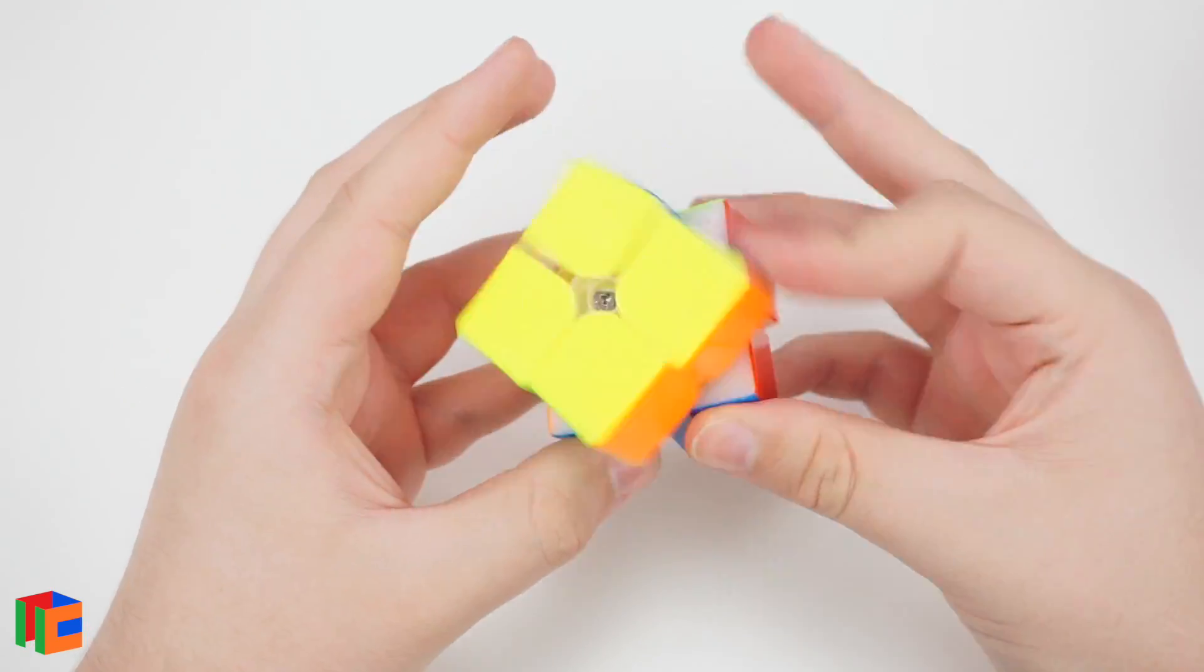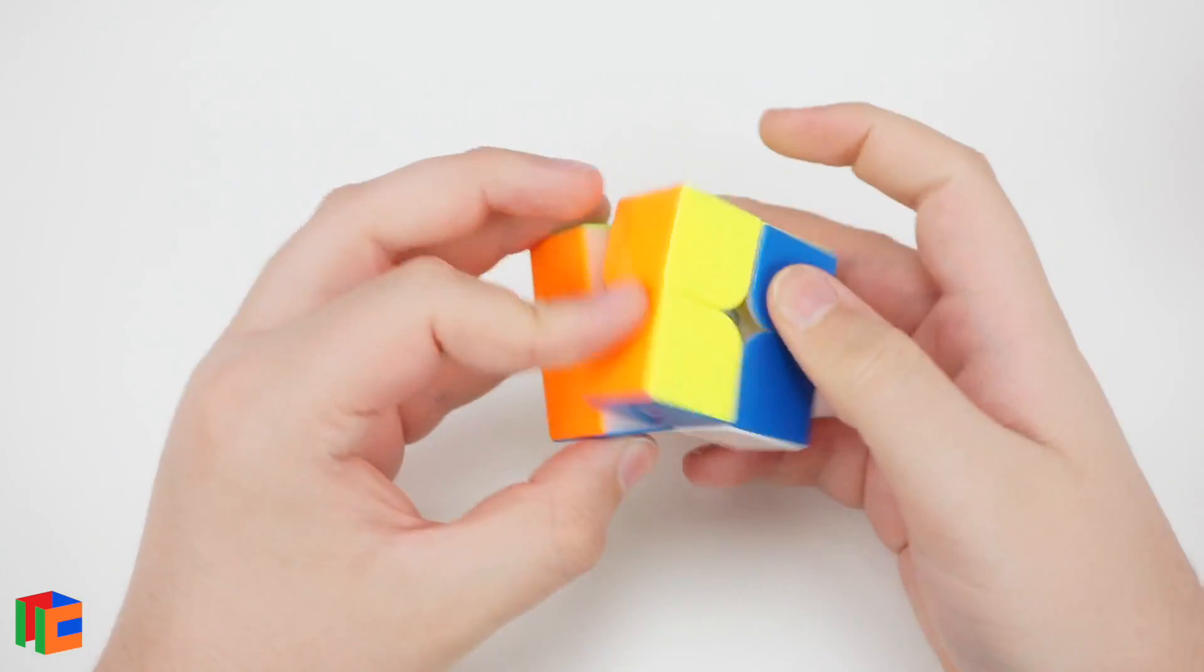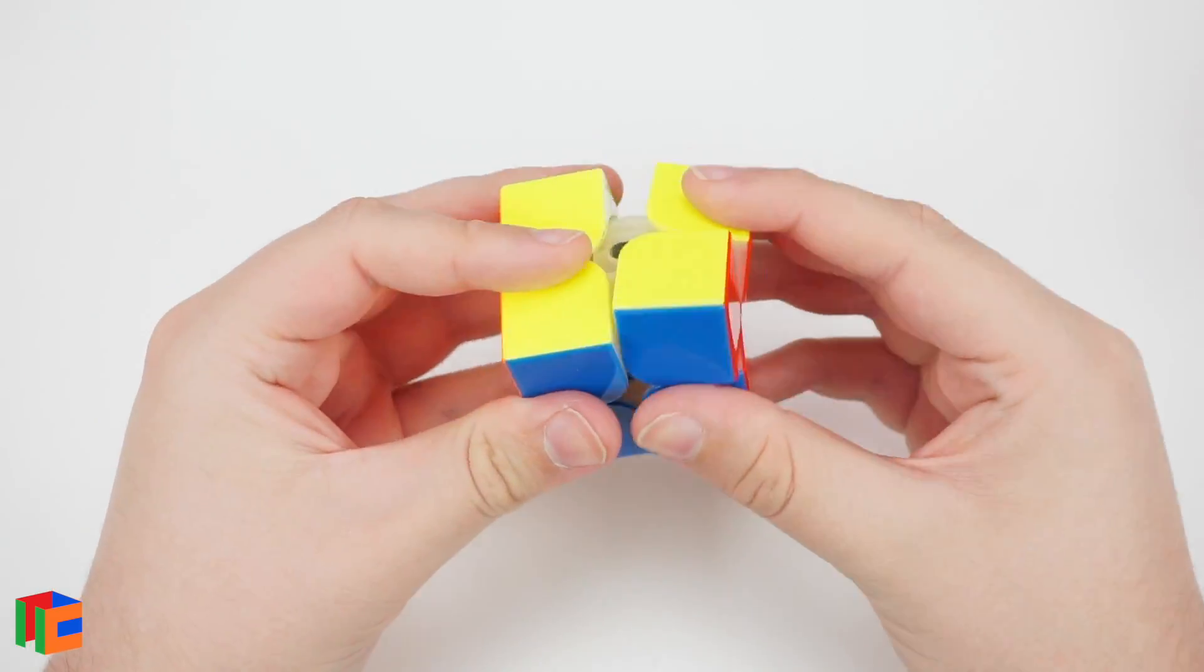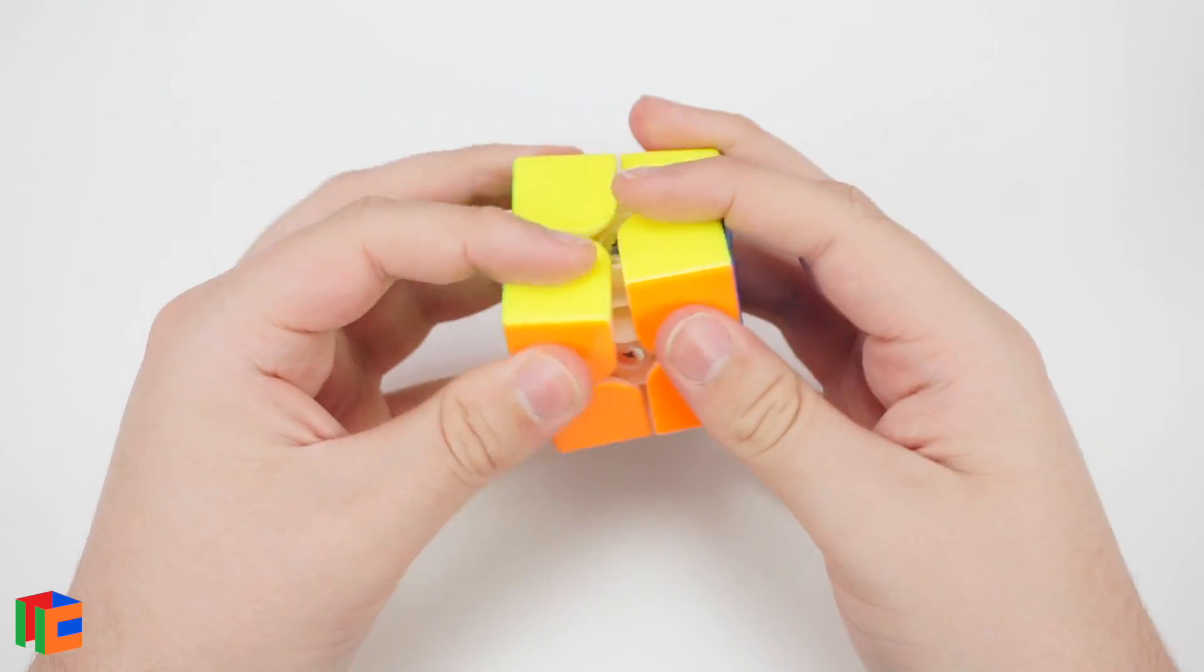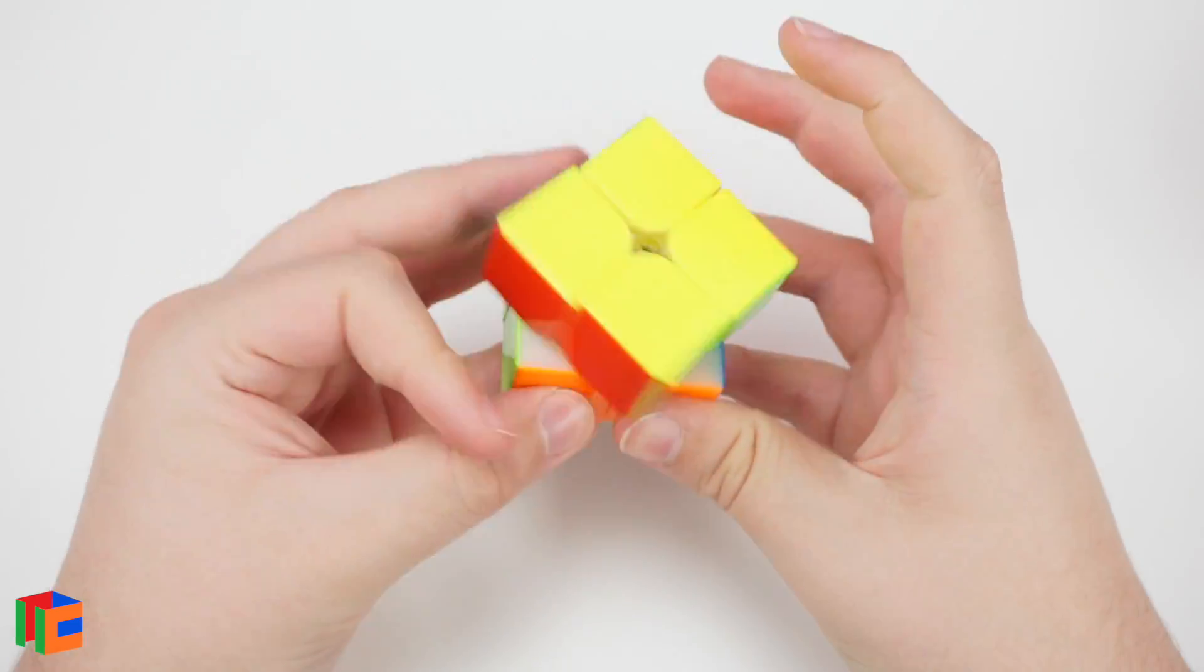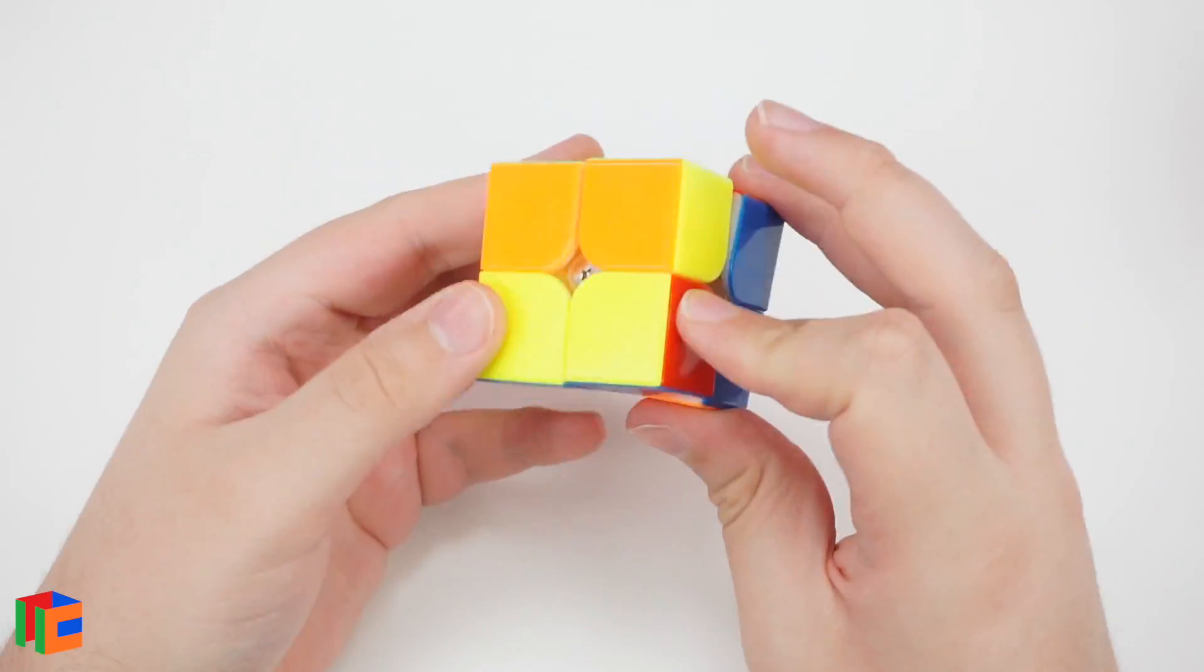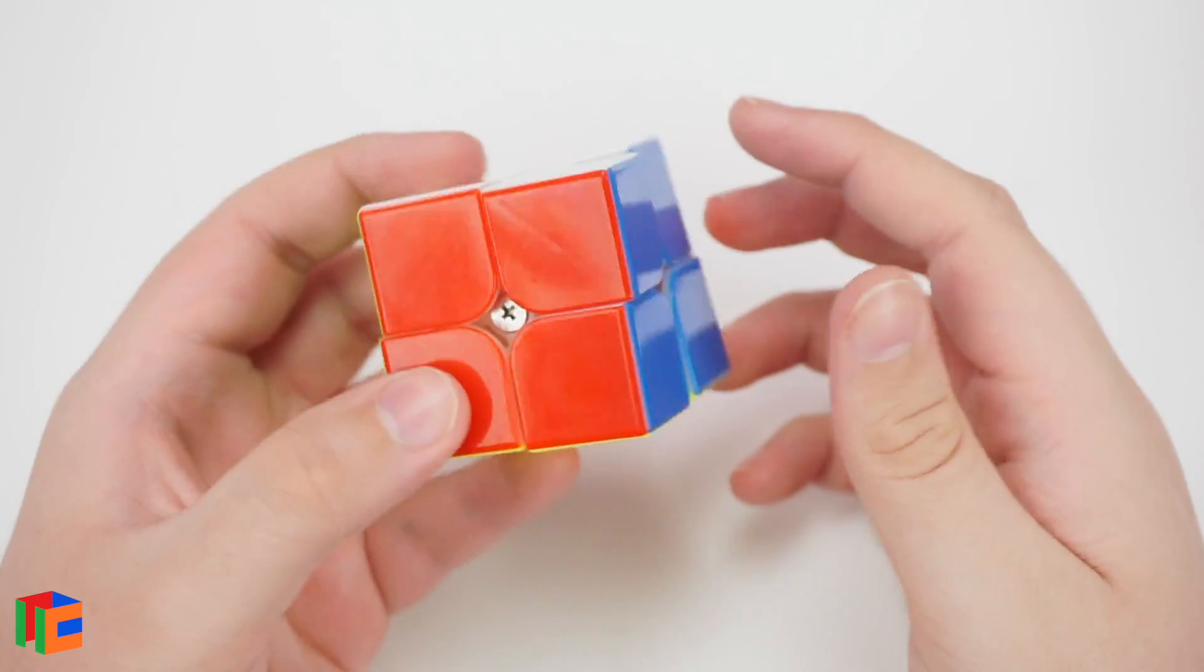This puzzle feels pretty good though. It's really, really smooth. So it's really silky and smooth. It doesn't feel bumpy at all. It deforms a lot. So it just kind of feels really loose and flimsy and floppy. The turning feels nice, but it doesn't seem like I can move very quick with this puzzle.